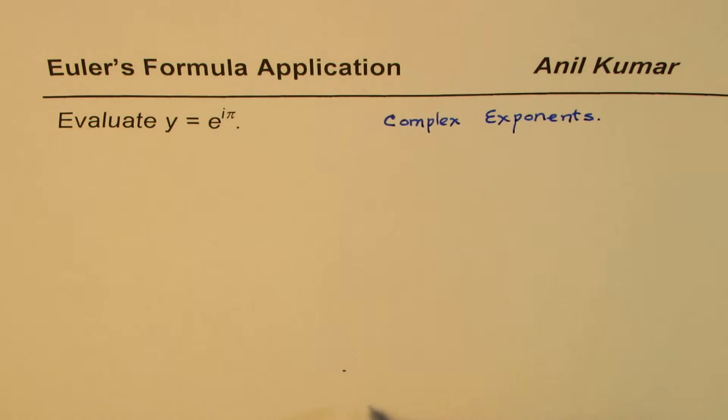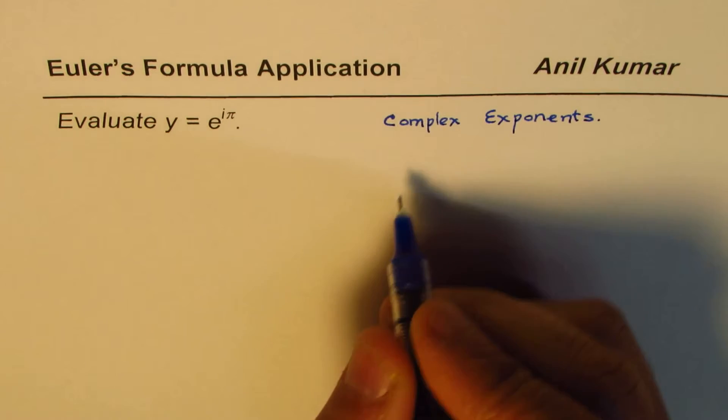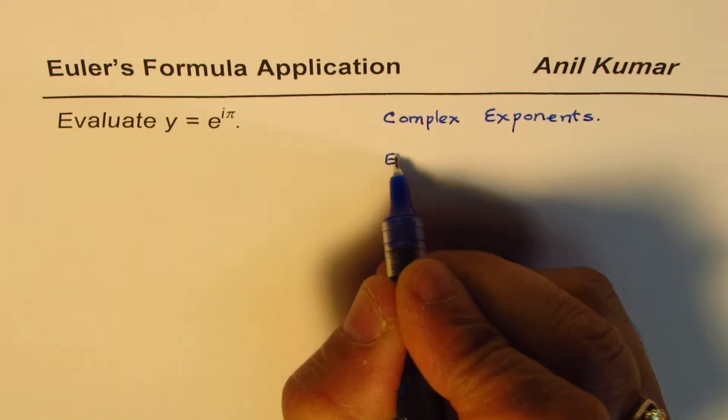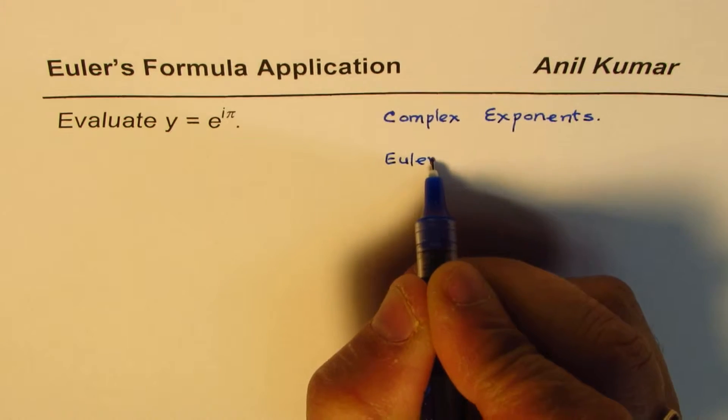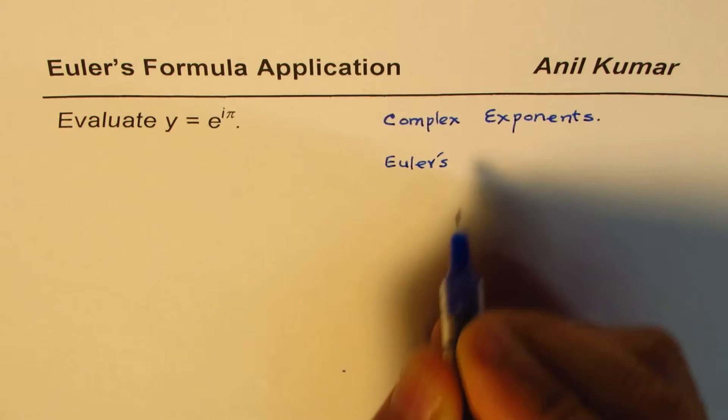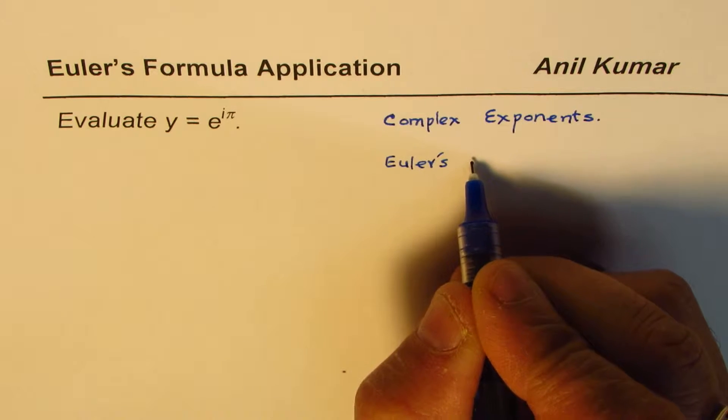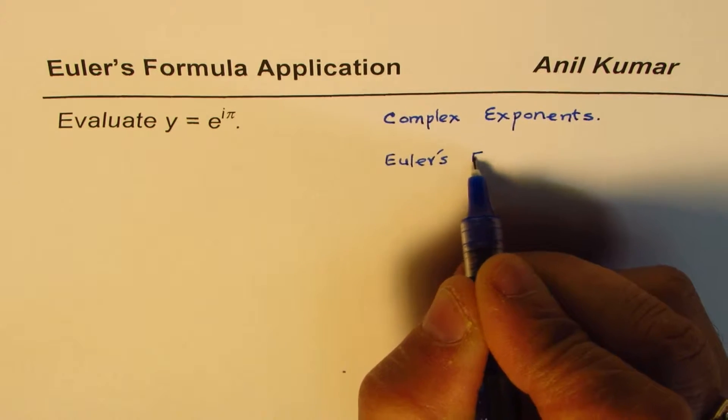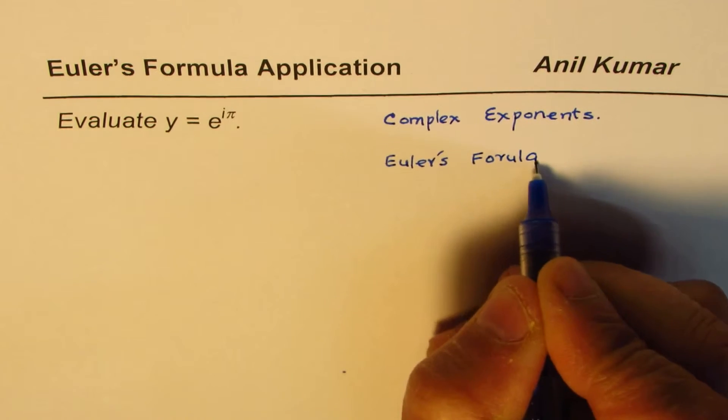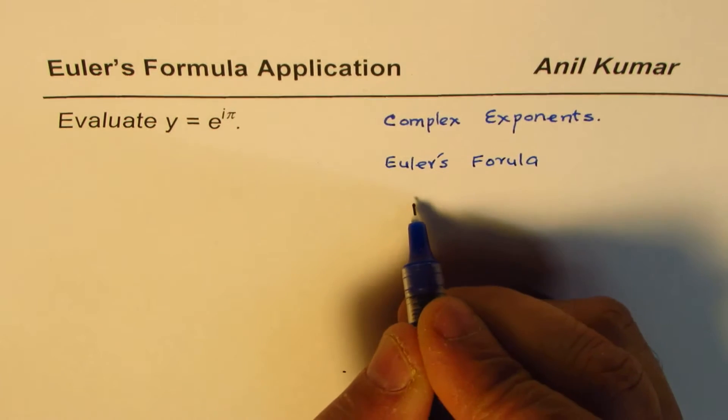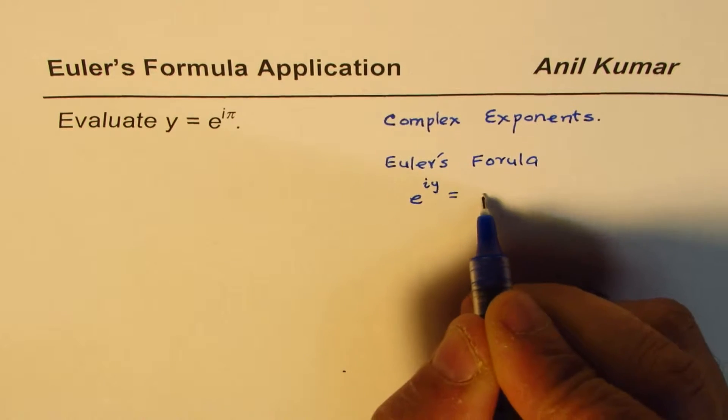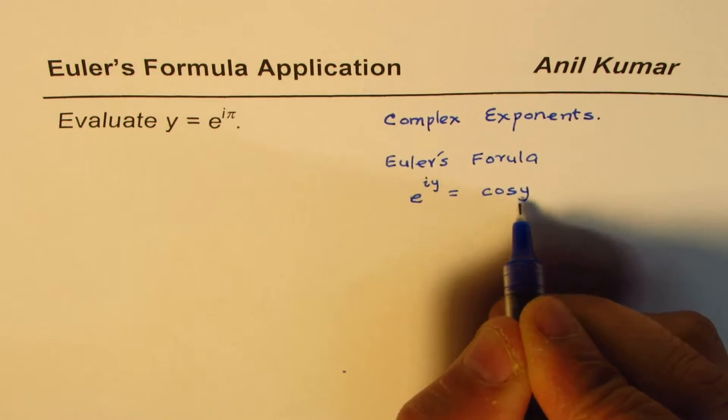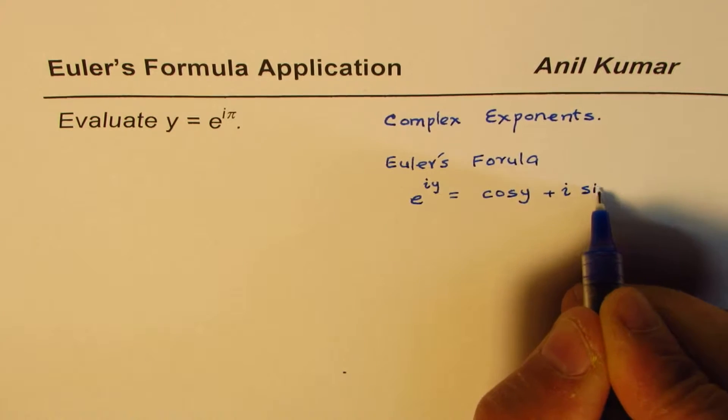To evaluate this, I'm going to use Euler's formula. Let me give you a few things which may be new for many of my subscribers since most of my subscribers are high school students who have not done all this. Euler's formula basically is e to the power of i y equals to cos y plus i sine y.